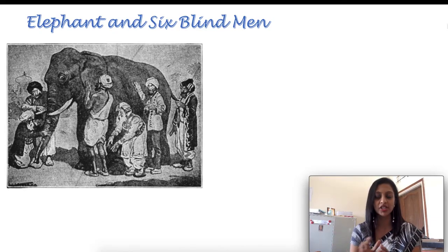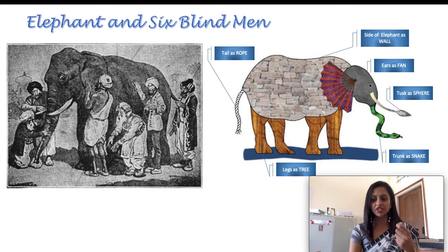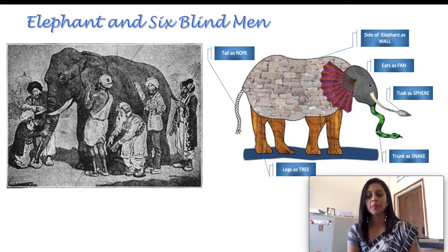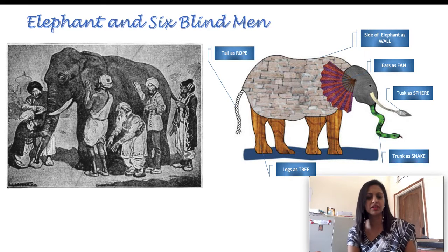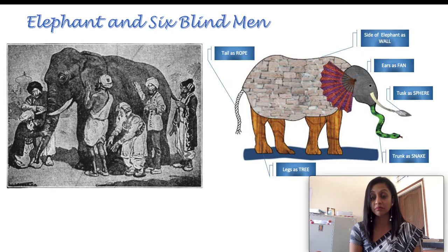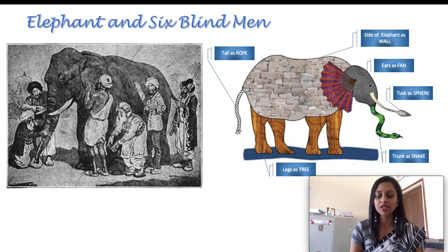Each one is touching a part of the elephant. A person who is touching the tail feels it is a rope. The person touching the side of the elephant thinks it is a wall. Someone touching the ears assumes it is a fan. Someone touching the tusk thinks it is a spear. Someone touching the trunk assumes it is a snake, and someone touching the leg feels it is a tree.